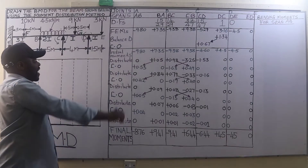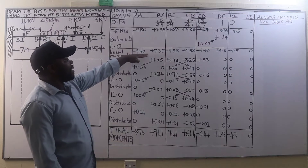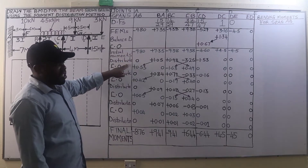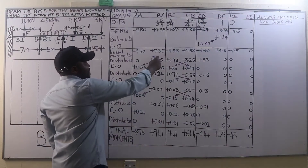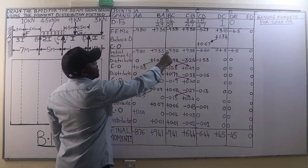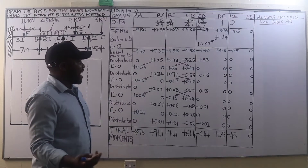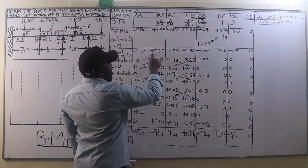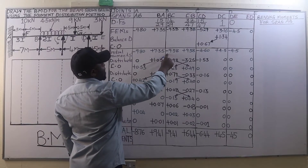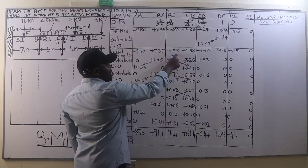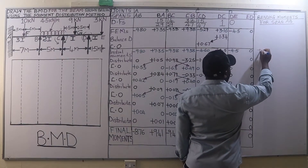After writing our initial moments we are going to distribute. When distributing, we do the same thing: find the excess moment between the two moments and change signs. So we have minus 7.35 plus 9.38, which gives plus 2.73.